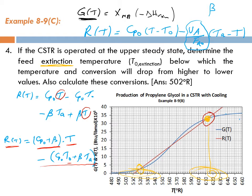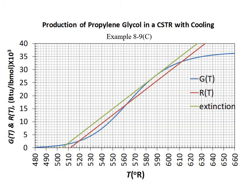Since we are studying extinction phenomena, the tangent will be from the upper left side. You can see this line plotted here — it is parallel to RT and tangent to gT. This is where extinction could happen, because any further decrease in T0 will move this line so that you lose the upper steady state and it will jump to the lower steady state. This is where extinction happens.